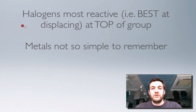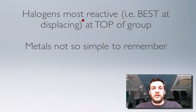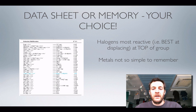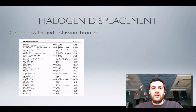It's quite simple for the halogens because the most reactive ones — the ones that can displace others — are found at the top of group 7 (or group 17), whereas the ones that can't displace others are found at the bottom. The trouble with the metals is it's not quite so simple, because the metals are dotted all around the place, so that's where this list of reduction potentials can come in quite handy.